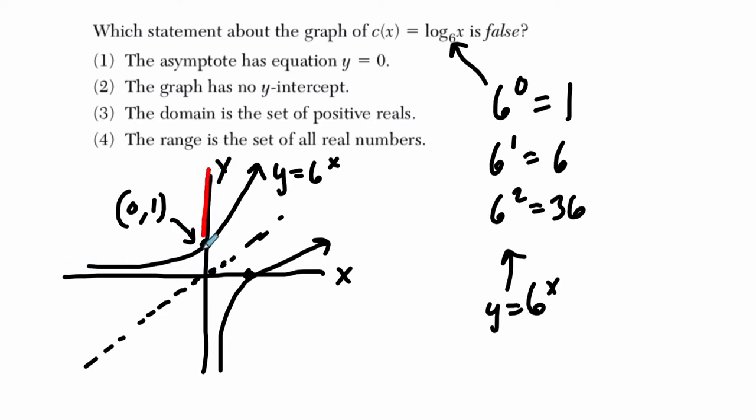Now our asymptote, our boundary, is actually the y-axis. So our logarithm will approach the y-axis, but never actually hit it perfectly.